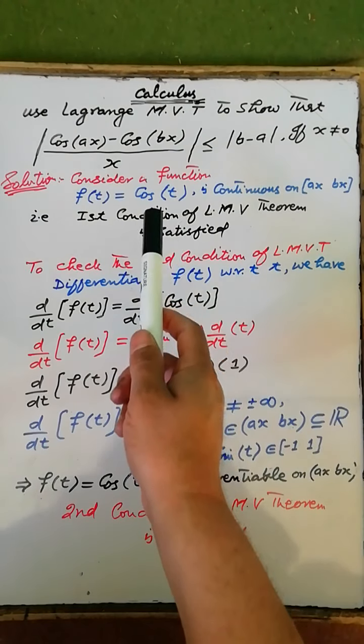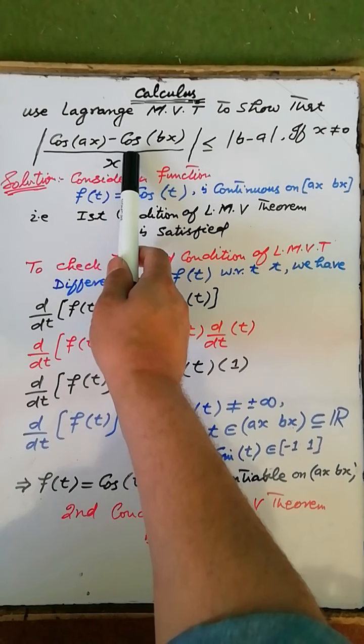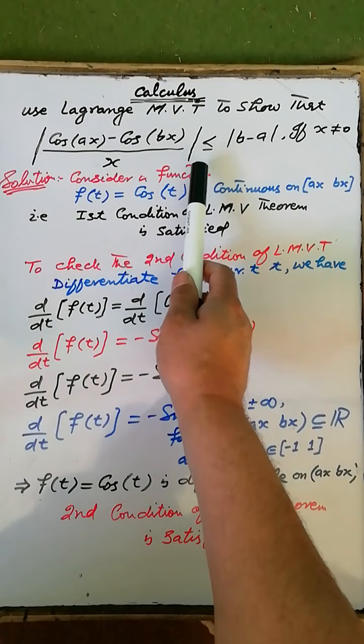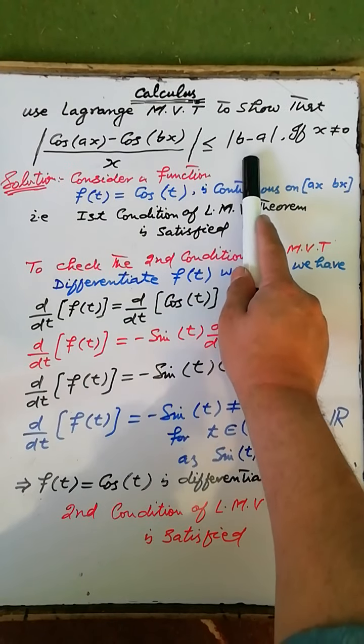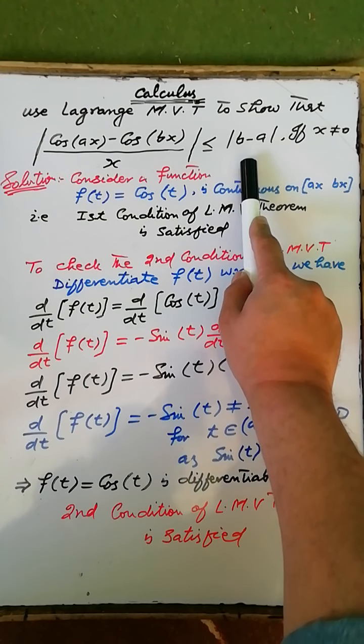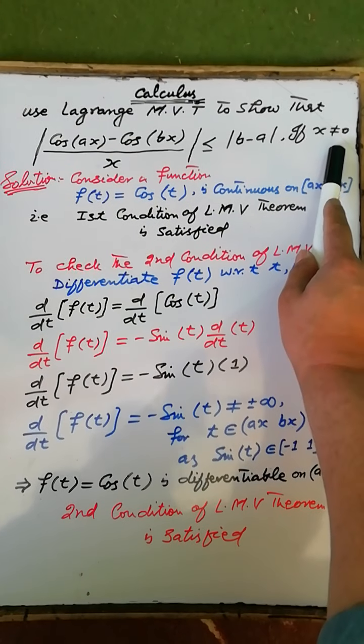Use the Lagrange Mean Value theorem to show that |cos(ax) - cos(bx)| / |x| is less than or equal to |b - a|, where x is not equal to 0.